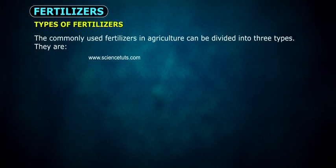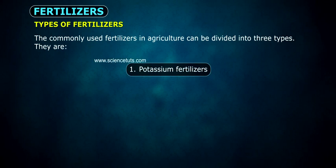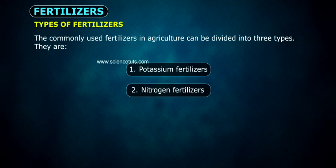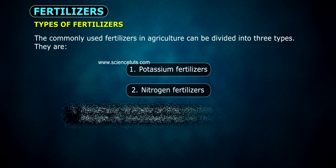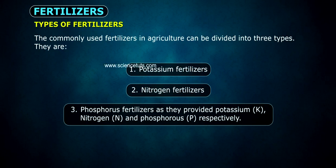Types of Fertilizers: The commonly used fertilizers in agriculture can be divided into three types — potassium fertilizers, nitrogen fertilizers, and phosphorus fertilizers — as they provide potassium (K), nitrogen (N), and phosphorus (P) respectively.